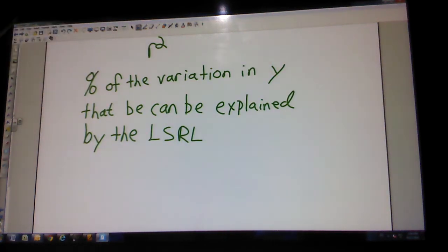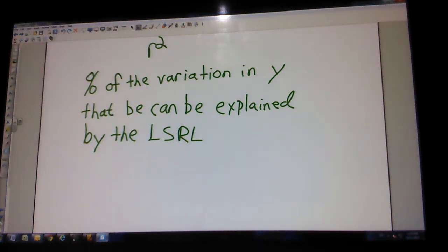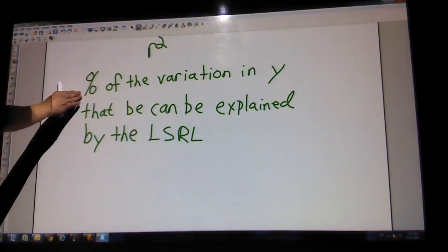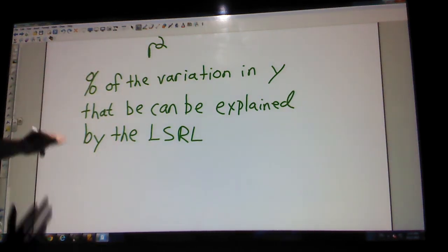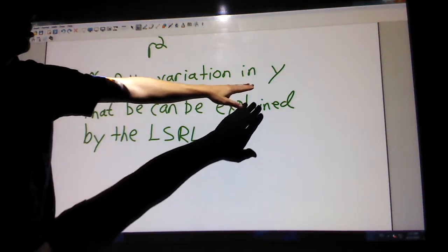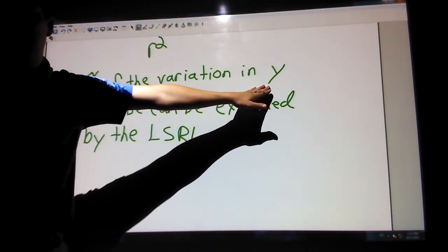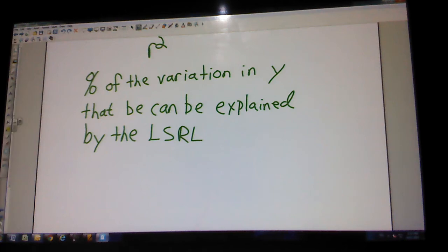R-squared. You will get one point if you can remember this. If I say interpret R-squared in context, it is the percent of variation in Y that can be explained by the least squares regression line. So if R-squared turned out to be 60%, make sure you put 60% in the sentence, and don't forget to replace Y with what it actually is in context.